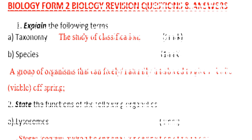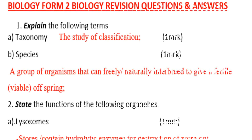Good morning, welcome to our channel. We are doing Biology Form 2 work division, question number one: explain the following terms. Taxonomy is the study of classification. Species is a group of organisms that can freely and naturally interbreed to give a fertile or viable offspring.